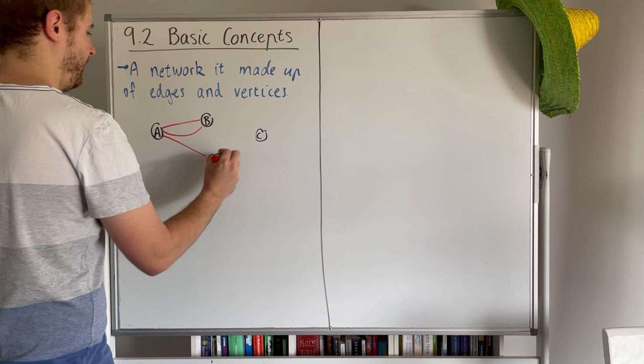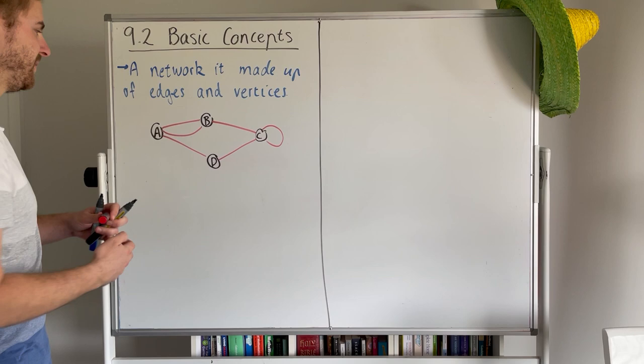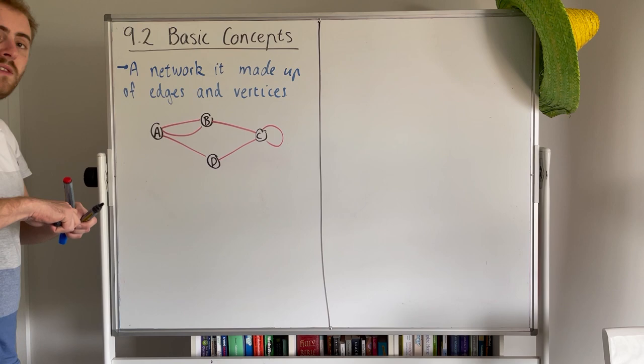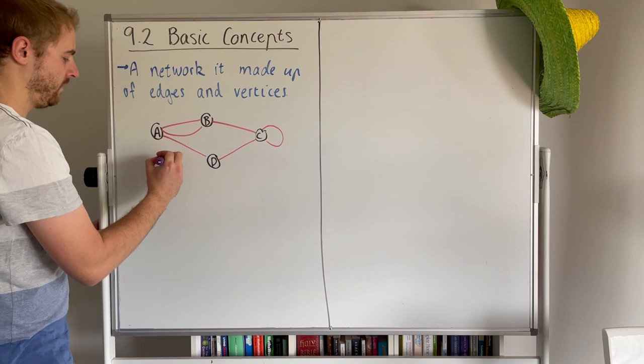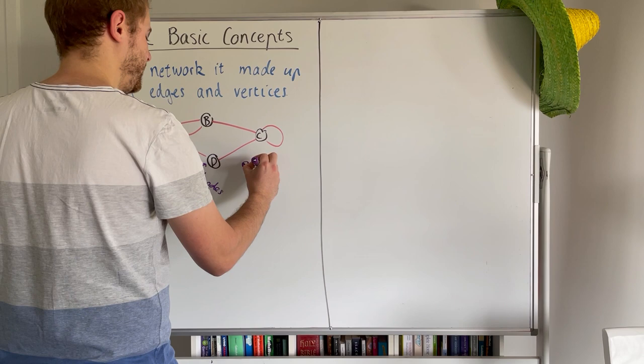And then edges connect them up. So these connections or these edges can look like anything depending on the context or the question that we're looking at. A lot of the practical applications we'll be looking at down the track will be roads between towns or different communications between people. So what we have here, the A, B, C, D represent our vertices or nodes, and these red lines represent our edges.